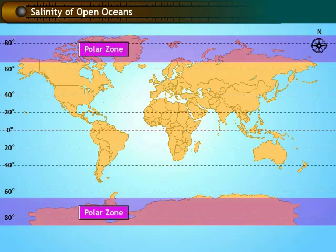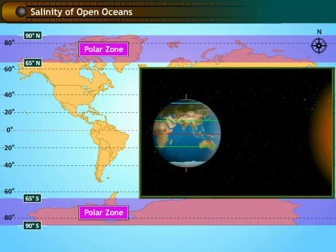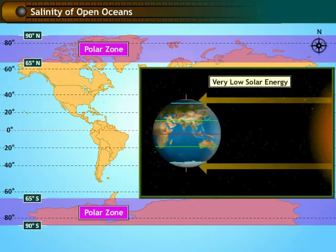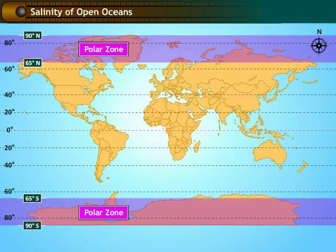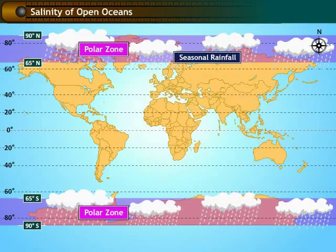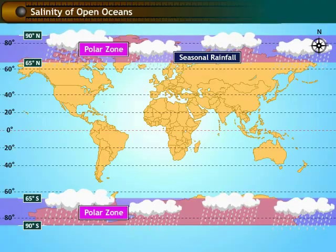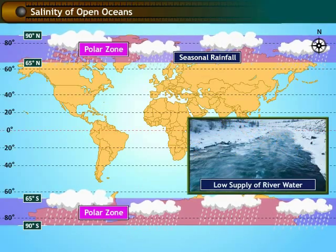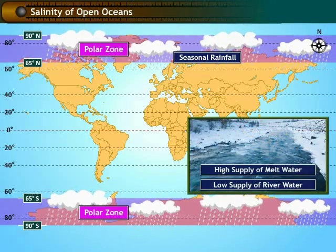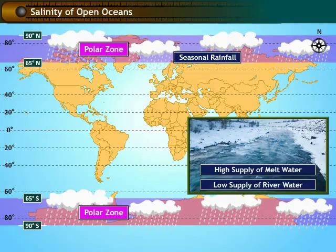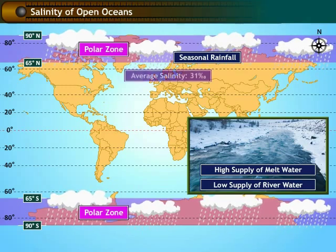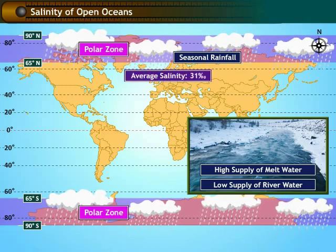The polar region is located between 65 degrees and 90 degrees north and south of the equator. It receives very low sunlight at an inclination, with seasonal rainfall. The supply of fresh river water is low while the supply of melt water is high. Hence, the salinity is quite low in the polar region, with an average of 31 parts per thousand.